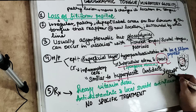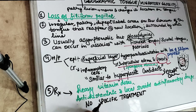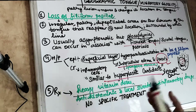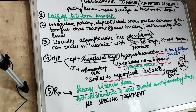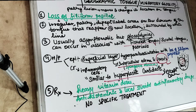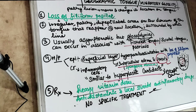There is no specific treatment as such for geographic tongue. However, in some patients a high dose of vitamins produces some results. In some patients, antihistamines and local steroidal anti-inflammatory drugs are given, and that also works for some people, but again there is no definitive specific treatment.